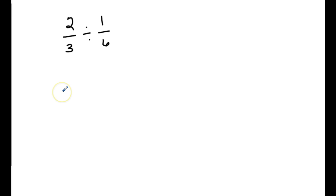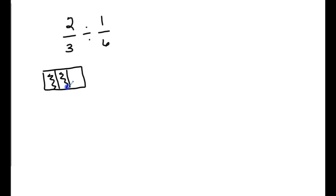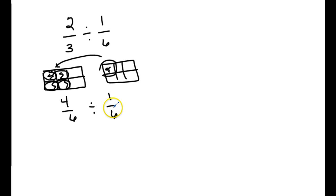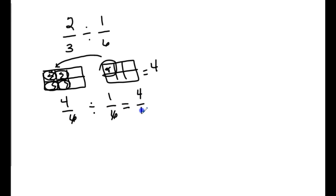This problem is two-thirds divided by one-sixth. We're asking how many one-sixths fit into two-thirds. They don't have common denominators, so we need to make them. We convert two-thirds into sixths, so the problem becomes four-sixths divided by one-sixth. How many of these fit into here? There's one, two, three, and four. So how many one-sixths are in four-sixths? There are four. The common units drop away, and four divided by one equals four.